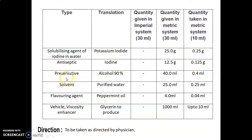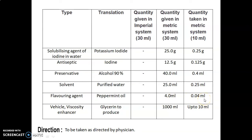Alcohol 90%, used as a preservative — quantity given 40 ml, quantity taken 0.4 ml. Purified water, used as a solvent — quantity given 25 ml; multiplied by 0.01, quantity taken = 0.25 ml. Peppermint oil, used as a flavoring agent — quantity given 4 ml; multiplied by 0.01, quantity taken = 0.04 ml.